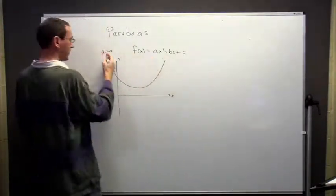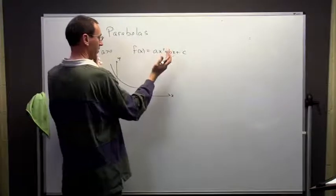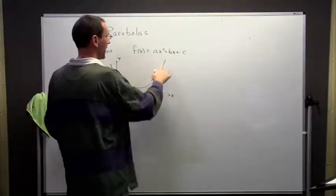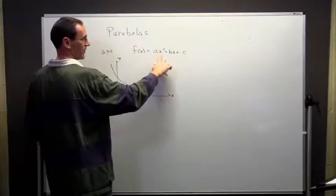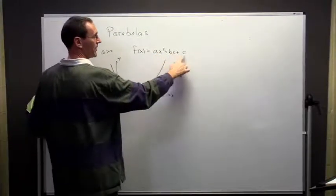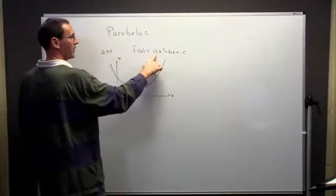This is going to go off, get really large on both sides, and it's going to open upwards. So as x gets larger and larger, this term is going to be much larger than these terms, and if I multiply by a positive number, it's going to get very large.